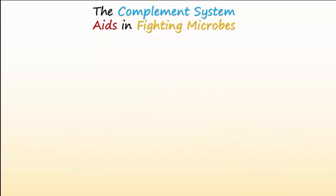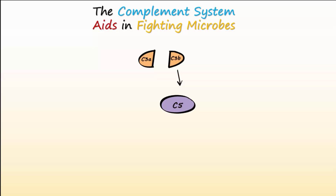In addition to acting as an opsonin, C3B will also activate the next complement protein in the cascade, which is C5. C5 gets split into its activated forms, which are C5A and C5B.